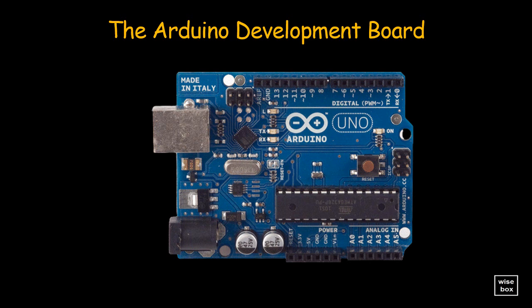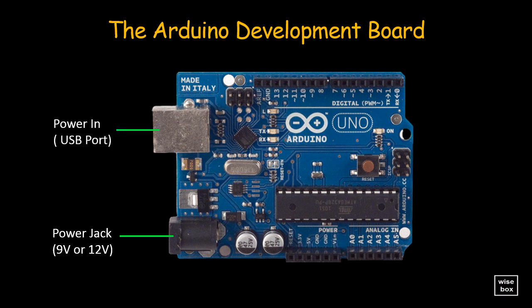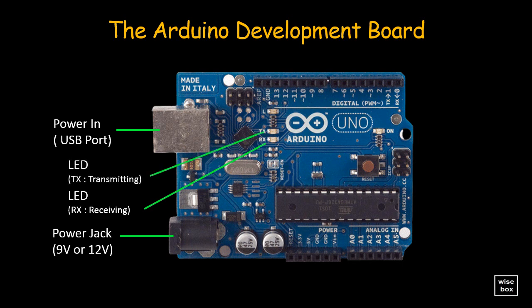Let's identify the different parts of the Arduino development board. The power-in barrel jack can be used with either a 9-volt or 12-volt wall adapter or battery. The power-in USB port provides power and communicates with your board when plugged into your computer via USB. The LED RX lights up when the Arduino is receiving data, and LED TX lights up when the Arduino is transmitting data, such as when running a program.